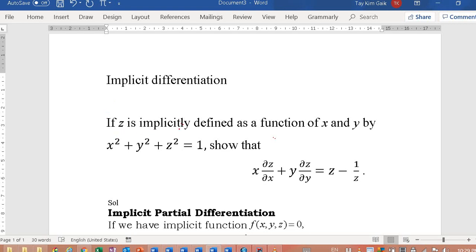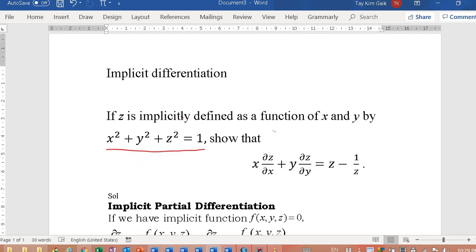For example, if z is implicitly defined as a function of x and y by x² + y² + z² = 1, show that x·∂z/∂x + y·∂z/∂y = z - 1/z.